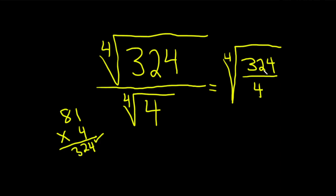So 324 divided by 4 is 81, because 4 goes into this 81 times. So this is the fourth root of 81.